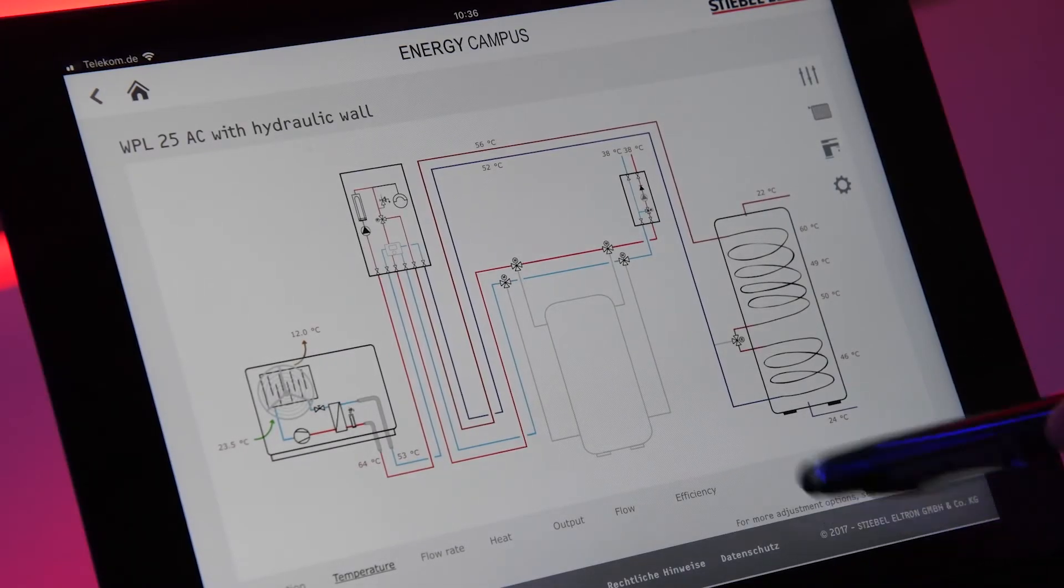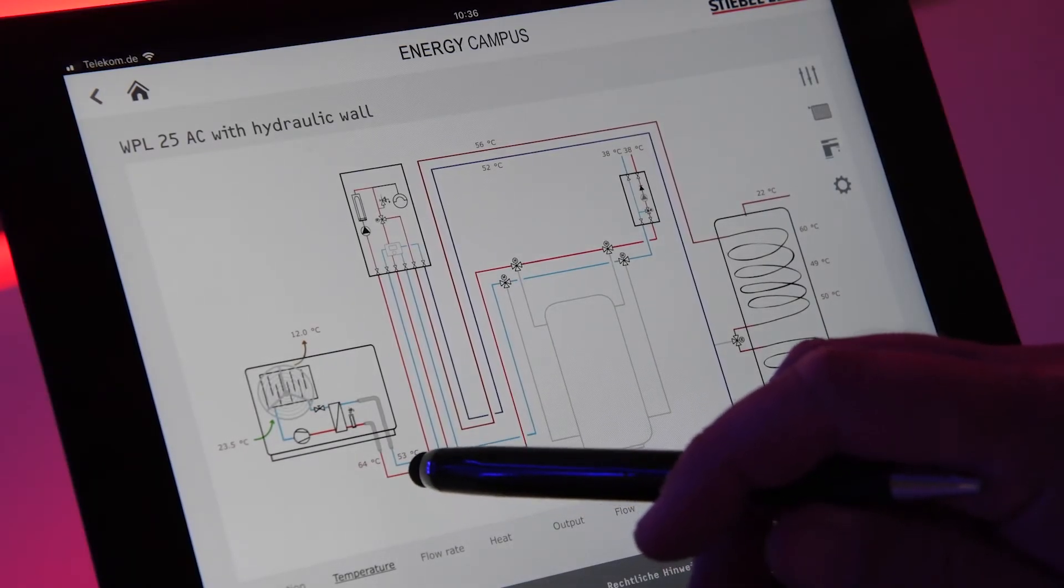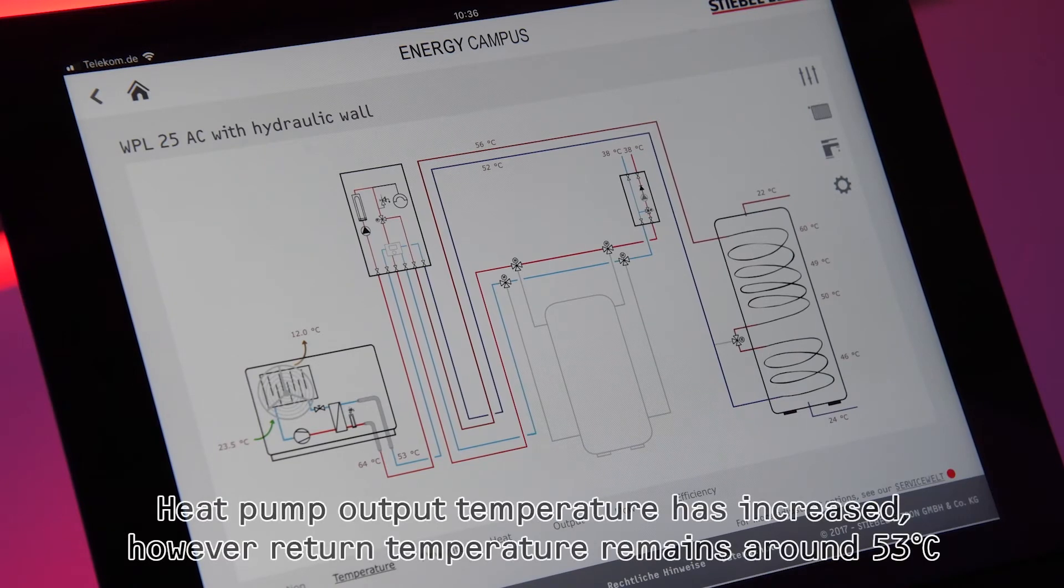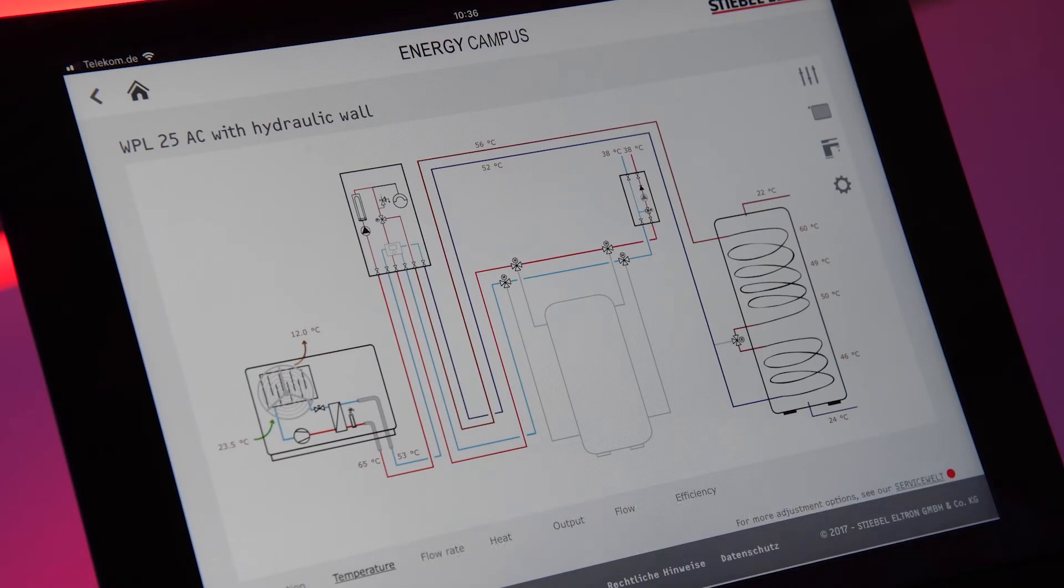Okay, have a look what has happened now. Our return temperature from the cylinder is still 53 degrees C but the flow temperature out of the heat pump has increased now to 65 degrees C. So before we had a delta T of 6 Kelvin, now we have a delta T of 12 Kelvin.